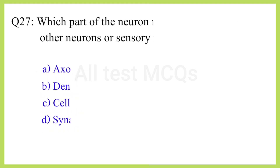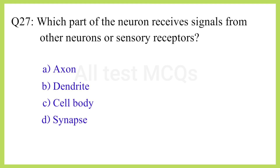Q27. Which part of the neuron receives signals from other neurons or sensory receptors? The correct answer is option B: Dendrite.